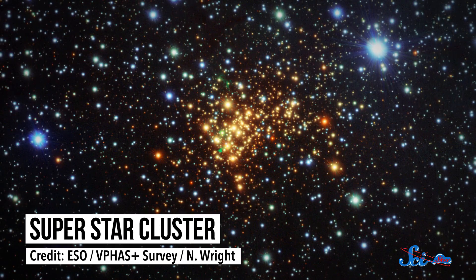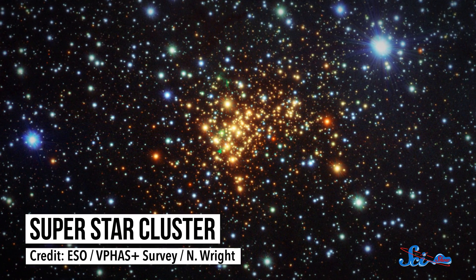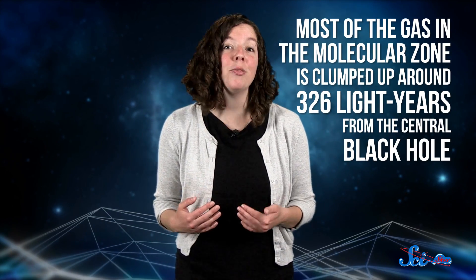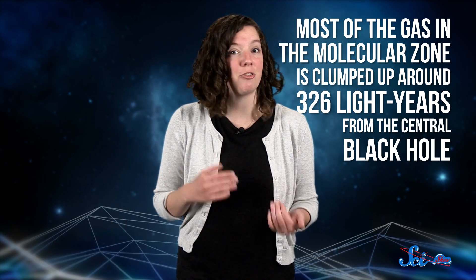But combine the gas clouds with the supermassive black hole's gravitational pull, and you get some weird effects. Not only is the region full of dark clouds, it's also scattered with superstar clusters and the corpses of dead stars. Much of the gas in the molecular zone is clumped up, lying along a twisted ring of dusty gas clouds around 326 light-years from the central black hole.